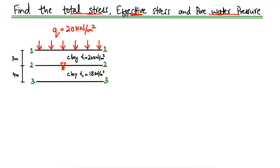The soil sample is given to us. There is a uniformly distributed load of 20 kN per square meter acting on this soil sample. The first soil we have is a clay with a unit weight of 20 kN per cubic meter and a depth of 3 meters.